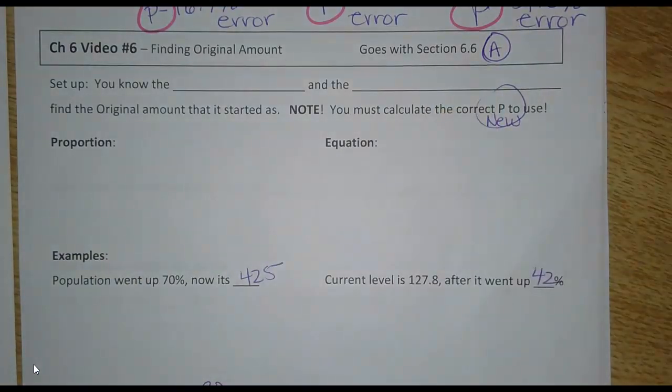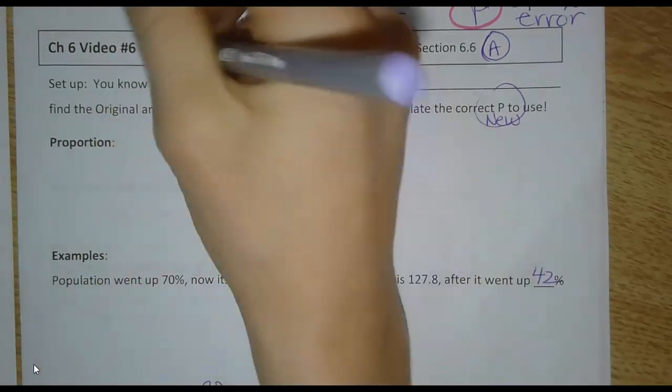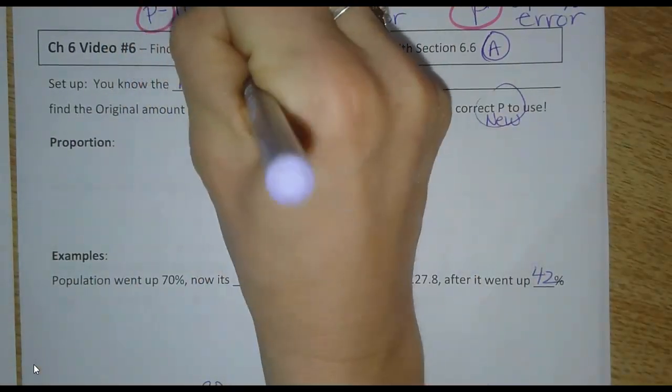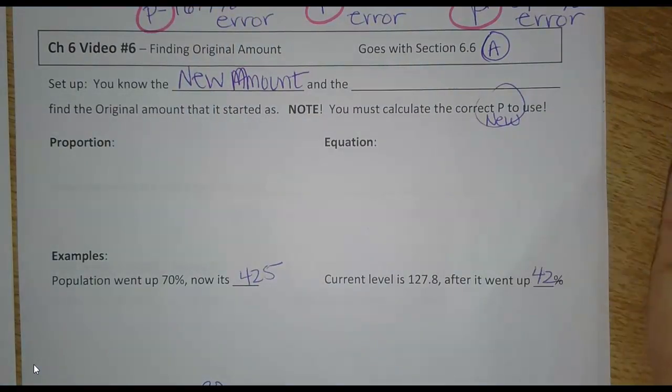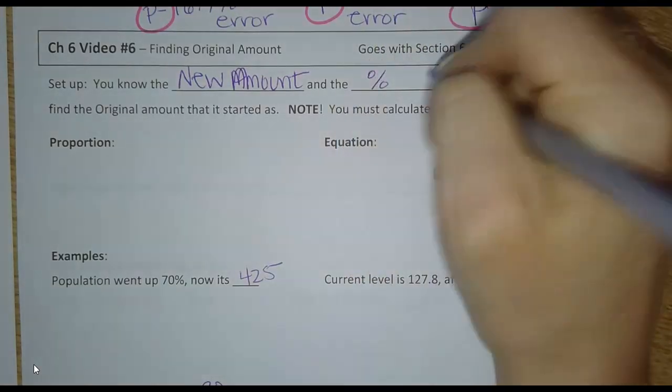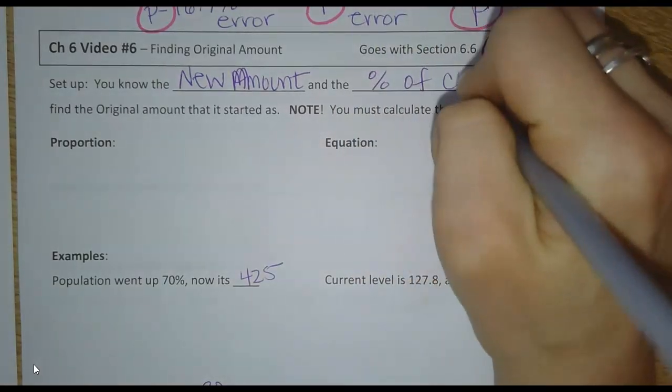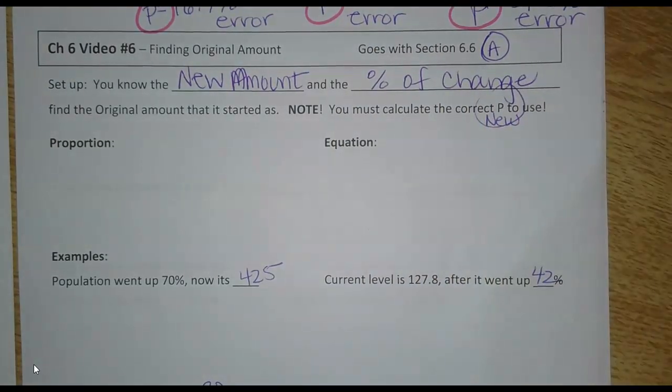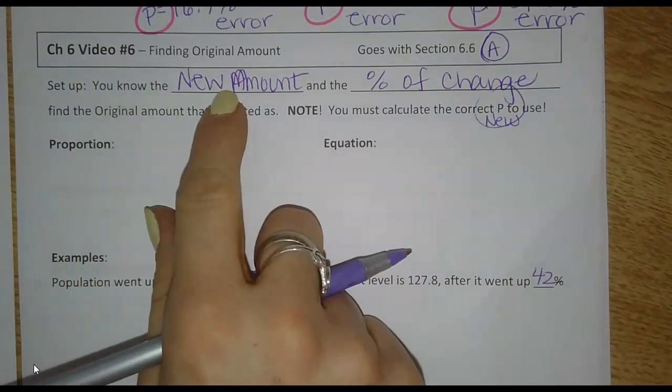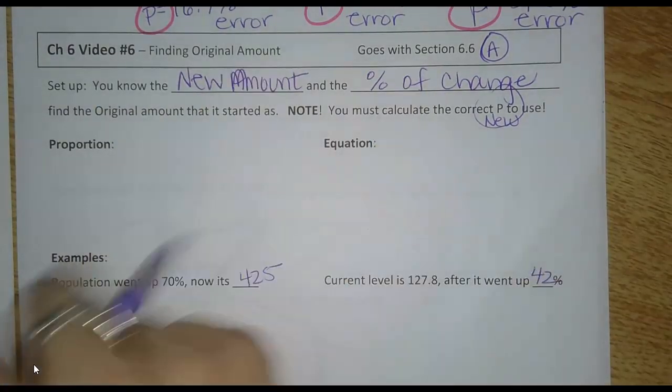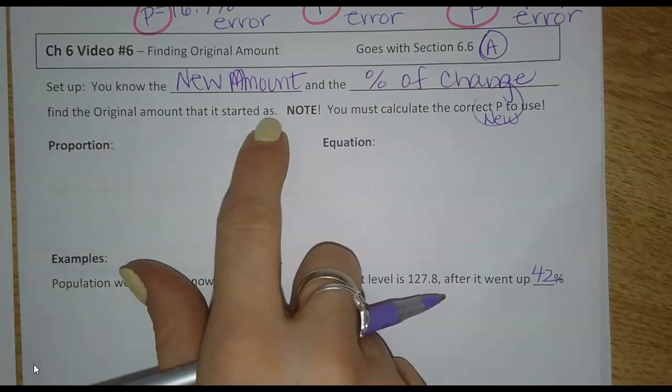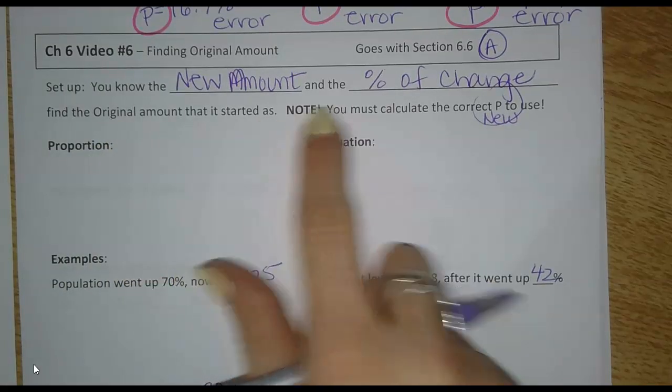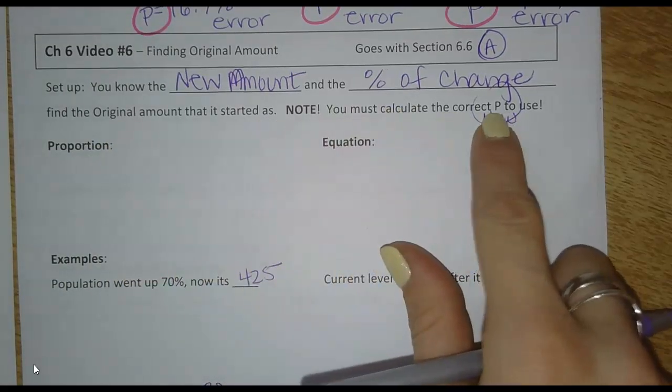So in this problem, you're going to need to know, they have to tell you the new amount. And by new amount, I mean like the sale price or whatever it is after it's already gone up or down. And you're going to have to know the percent of the change. But you know what it is now, you know how much it changed. It's kind of like working backwards to figure out what the original amount was. Again, like we did before, you're going to have to calculate the correct percent to use in the problem.